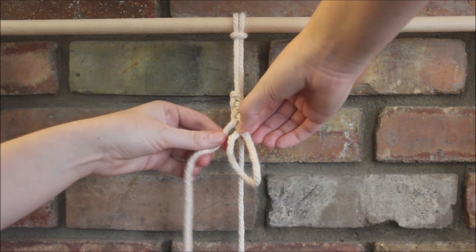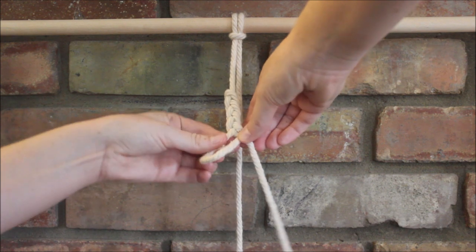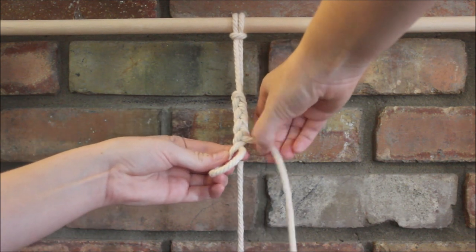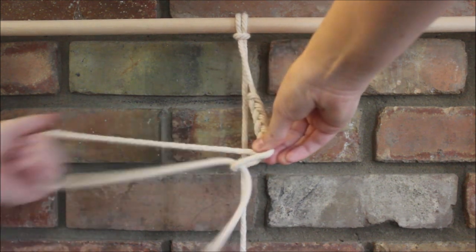So we take that again and it goes under and through. Our loop twists around itself. Then we send it under and through. And repeat.